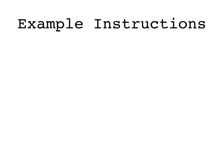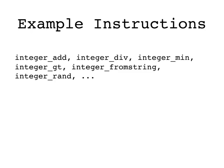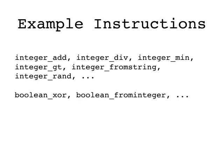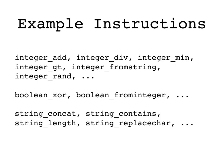Most Push implementations include dozens or hundreds of instructions, but we'll look at just a few here. Here are some typical integer instructions: to add two integers, divide two integers, find the minimum of two integers, determine whether one integer is greater than another, read an integer from a string, and generate a random integer. There are also instructions for taking the exclusive or of two booleans and for converting an integer to a boolean, which will be false unless the integer is zero. Here are instructions for concatenating two strings, for checking whether a string contains a substring, for getting the length of a string, and for replacing one character with another in a string.